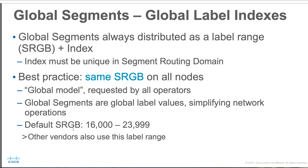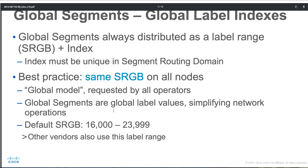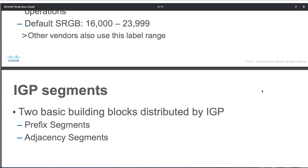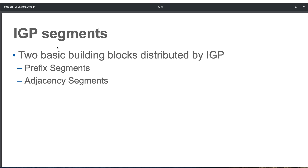The default SRGB block starts from 16,000. Anything less than 16,000 is fixed or reserved labels; anything starting from 24,000 is your dynamic labels. Other vendors also use this label range. So by default, your SRGB starts from 16,000 as the base number, and on top of that you configure an index value. For example, SRGB plus index 1 means 16,001 — that's the first router's unique ID. The next router would be SRGB plus index 2, giving 16,002.